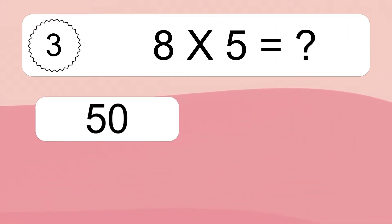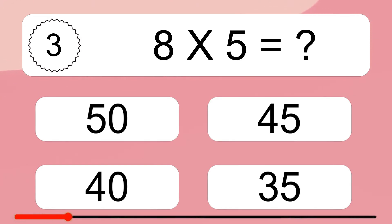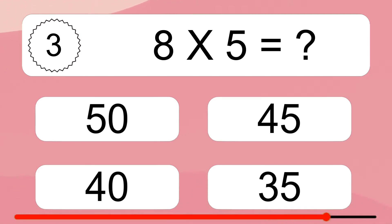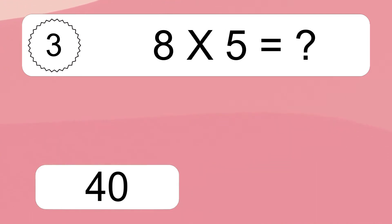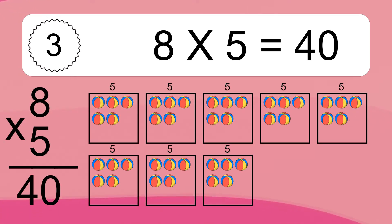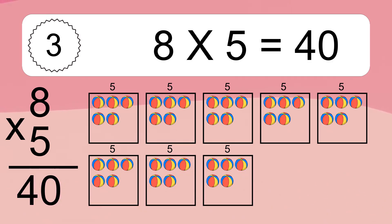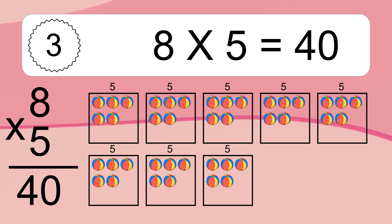Eight times five equals what? Eight times five equals forty. We have eight boxes, and each box has five colorful balls inside. If you count all the balls in all the boxes together, you will have eight times five balls.